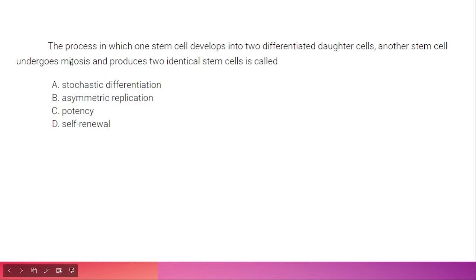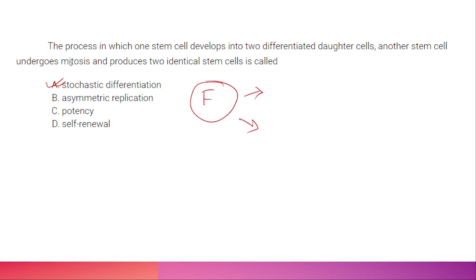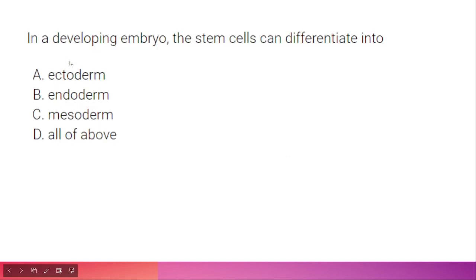The process in which one stem cell develops into two differentiated daughter cells while another stem cell undergoes mitosis and produces two identical stem cells is called stochastic differentiation. Stochastic differentiation means one stem cell can differentiate into two daughter cells.